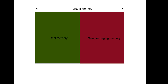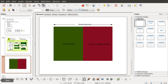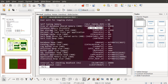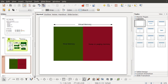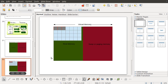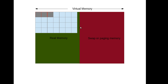The next parameter is the db_mem_threshold. Let's see what db_mem_threshold is. Imagine this is your RAM and this is your swapping or paging memory — this total is your virtual memory. Whatever you see in the light blue boxes is the memory currently being used by your database, and the rest of the memory is used by the OS or any other process.